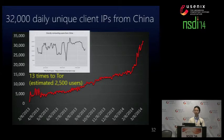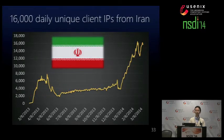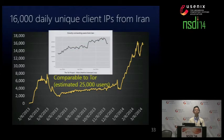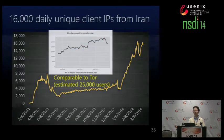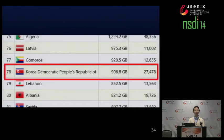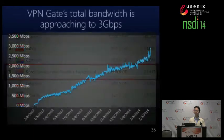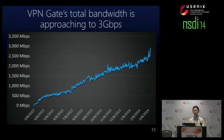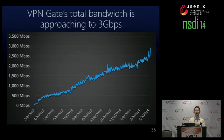Not only China, but also other countries have significant numbers of users. Not only Iran — North Korea has a university that can access the internet, and they are using VPN Gate to access the free internet. The total bandwidth of all VPN Gate servers is approaching 3 Gbps. It's very expensive if you set up such a relay system in a data center. However, we pay nothing to volunteers, so this system can achieve such large bandwidth for many users.